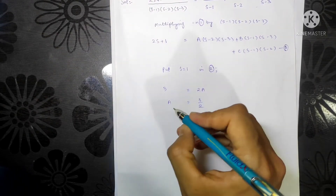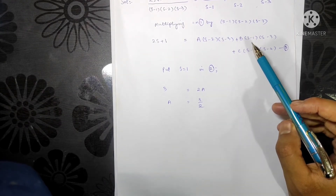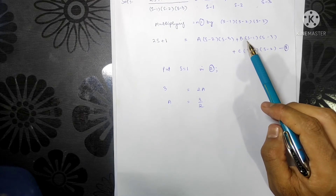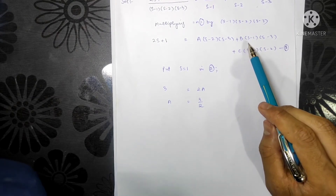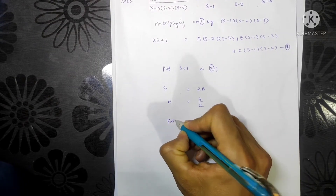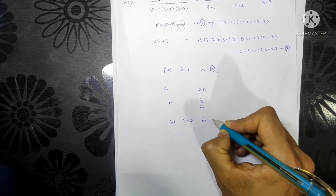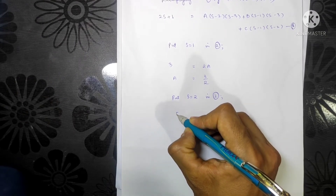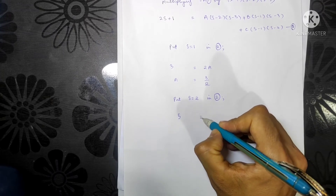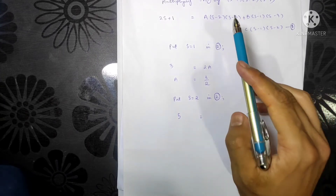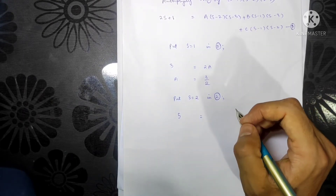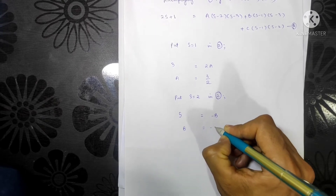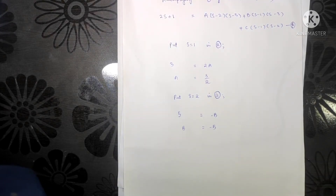Now we find B by putting s equal to 2 in Equation 2. The LHS gives 2(2) + 1 = 5. The A and C terms become zero. We are left with B(2 minus 1)(2 minus 3) = B(1)(-1) = minus B. So 5 = minus B, which implies B = minus 5.